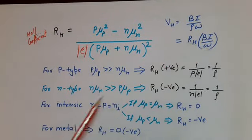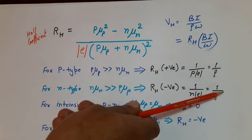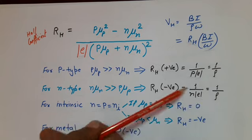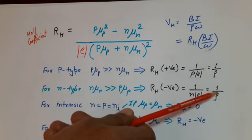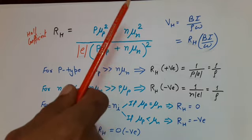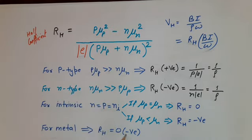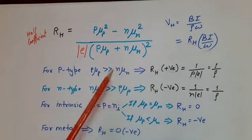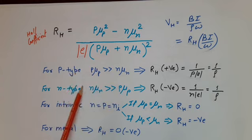For metals, the electron concentration is very large, so the volume charge density ρ is very large — essentially infinite. Therefore, the Hall coefficient RH = 1/ρ ≈ 0. And similarly, since electron mobility is greater than hole mobility, RH can also be slightly negative for metals. We can conclude: if the Hall coefficient is positive, current is due to positive charge carriers (holes); if negative, it is due to negative charge carriers (electrons).